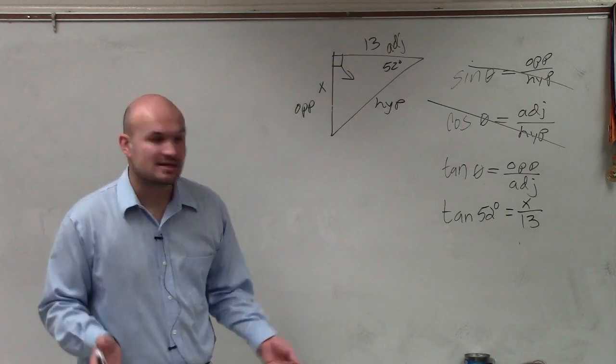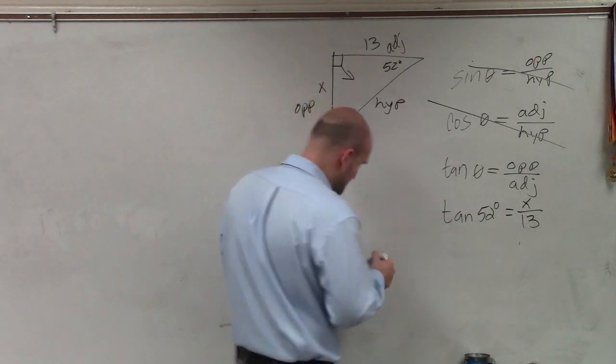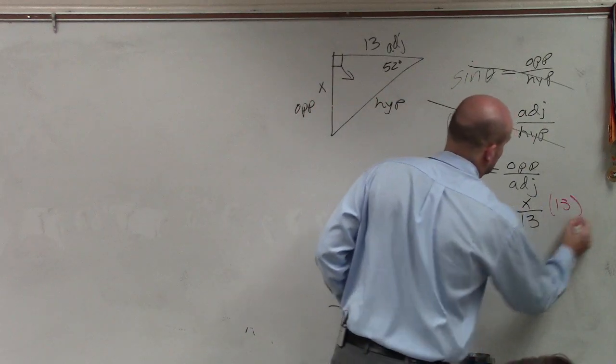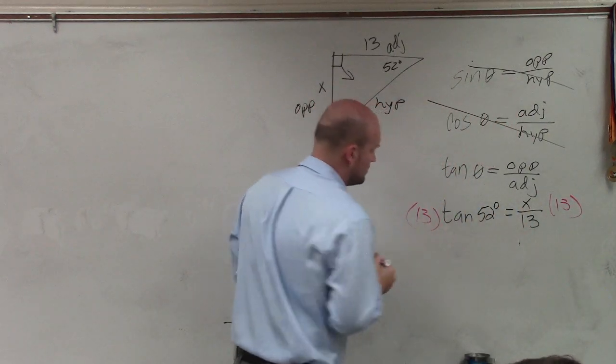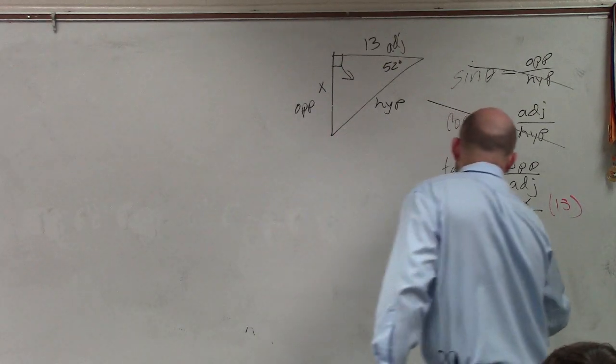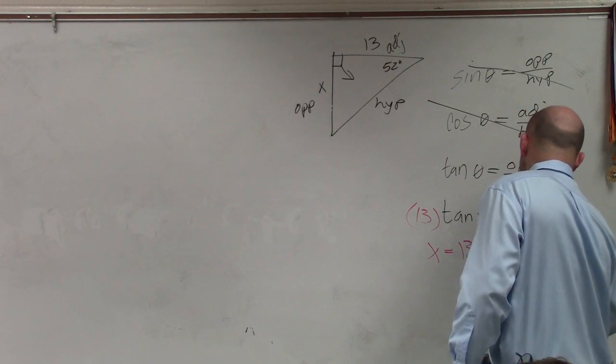Now, I just need to solve for x. So I need to get the 13 off the bottom. So what I'll do is I'll multiply 13 on both sides, and therefore, x equals 13 times the tangent of 52 degrees.